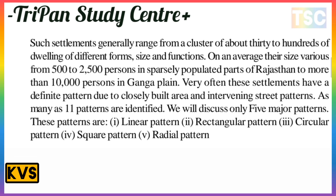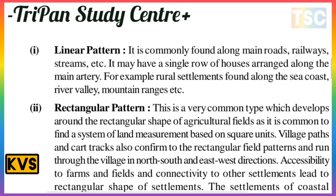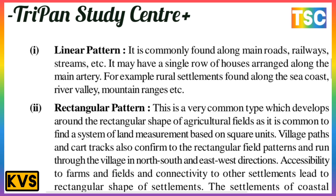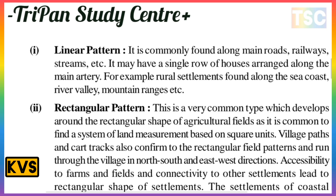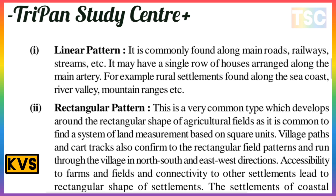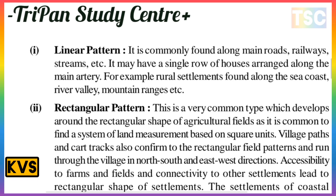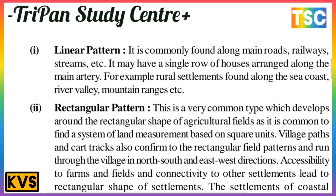First is the linear pattern. It is commonly found along main roads, railways, and streams. It may have a single row of houses arranged along the main road. For example, rural settlements are found along sea coasts, river valleys, and mountain ranges.